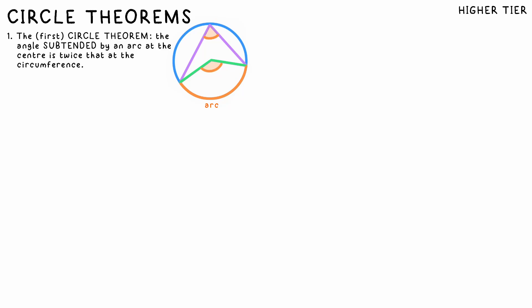The first circle theorem: the angle subtended by an arc at the center is twice the angle subtended at the circumference. In essence, the angle is double at the center compared to when it's at the line. This is true no matter where the angle on the line is, so long as its two chords meet at the two radii lines from the center.